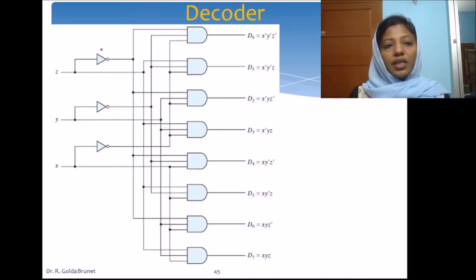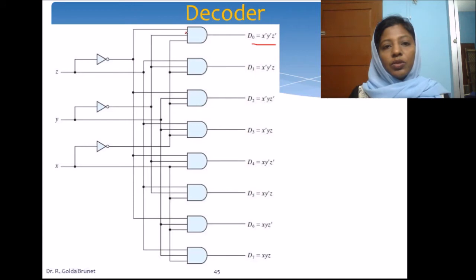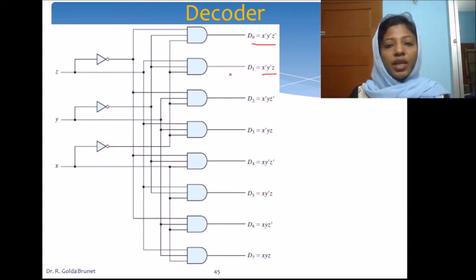We can realize the decoder circuit like this: we have x, x-bar, y, y-bar, z, z-bar as inputs. D0 will be x-bar AND y-bar AND z-bar. We connect x-bar, y-bar, and z-bar to the corresponding AND gate. Similarly, we connect the literals corresponding to each minterm and generate the outputs of the decoder.